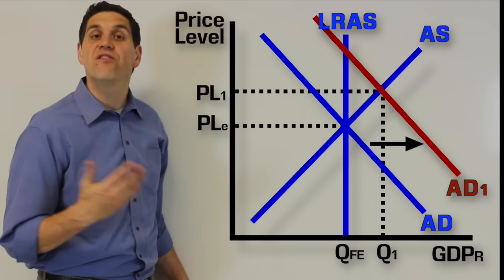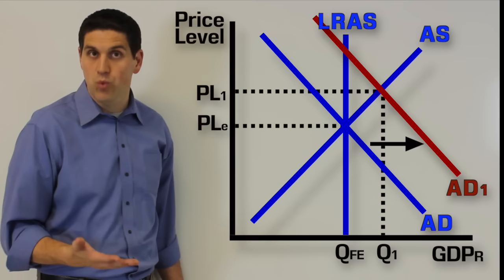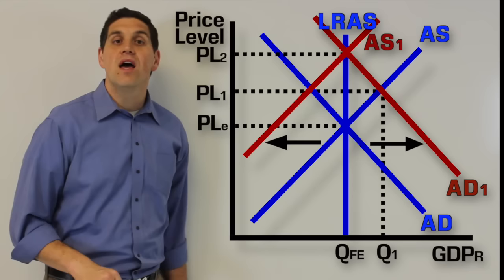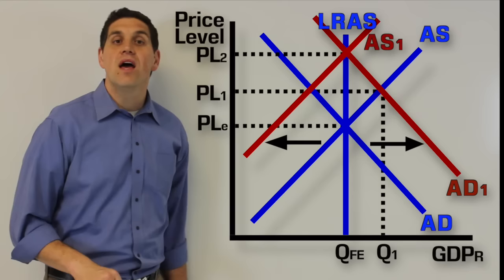In the long run, if there's inflation, eventually wages and resource prices will increase, and that'll cause the aggregate supply curve to shift to the left, putting us back at full employment. Now it turns out that's where that vertical long-run aggregate supply curve comes from. It's when the economy self-corrects itself, putting us back at full employment.